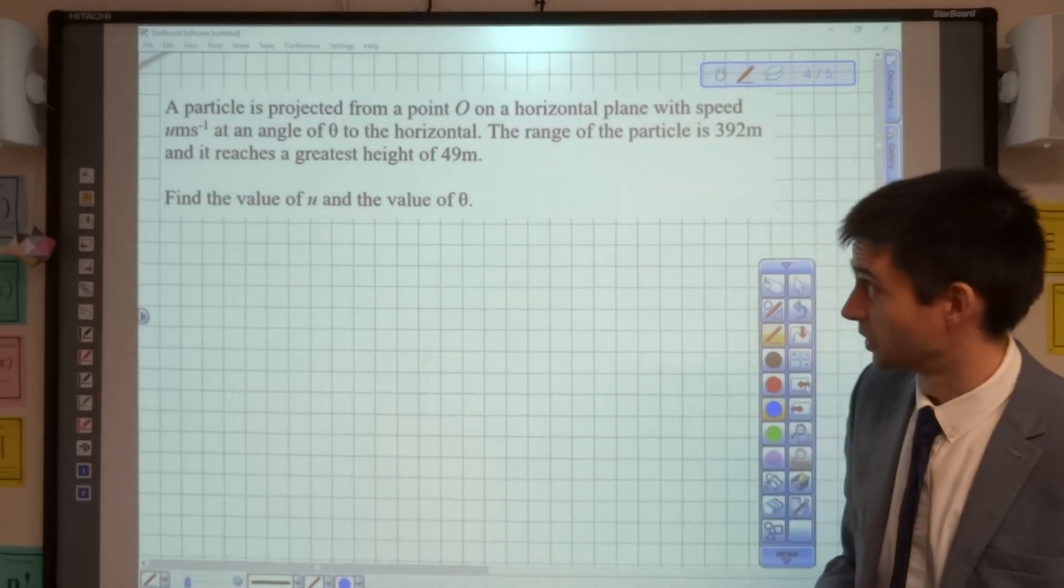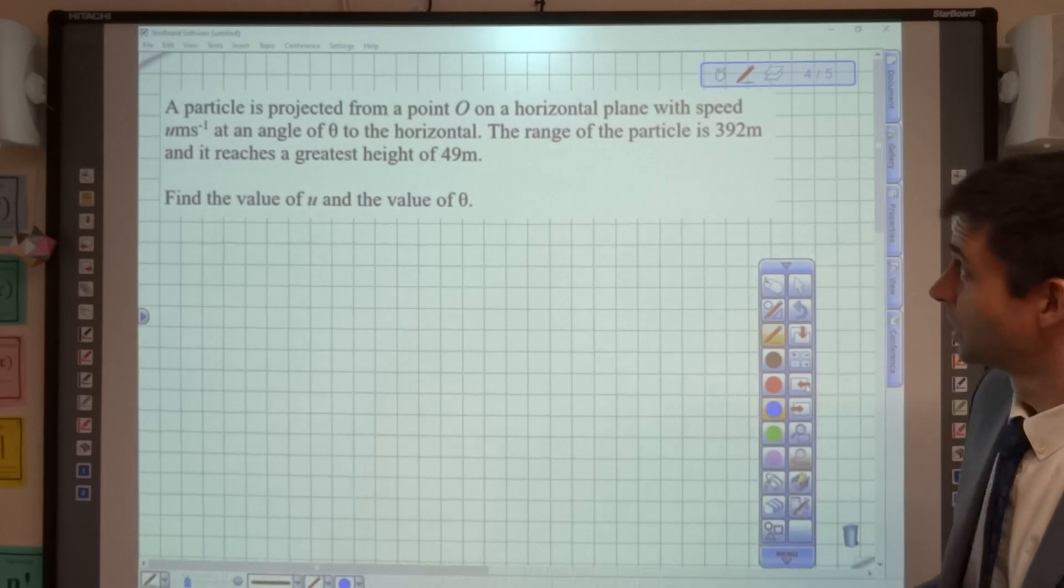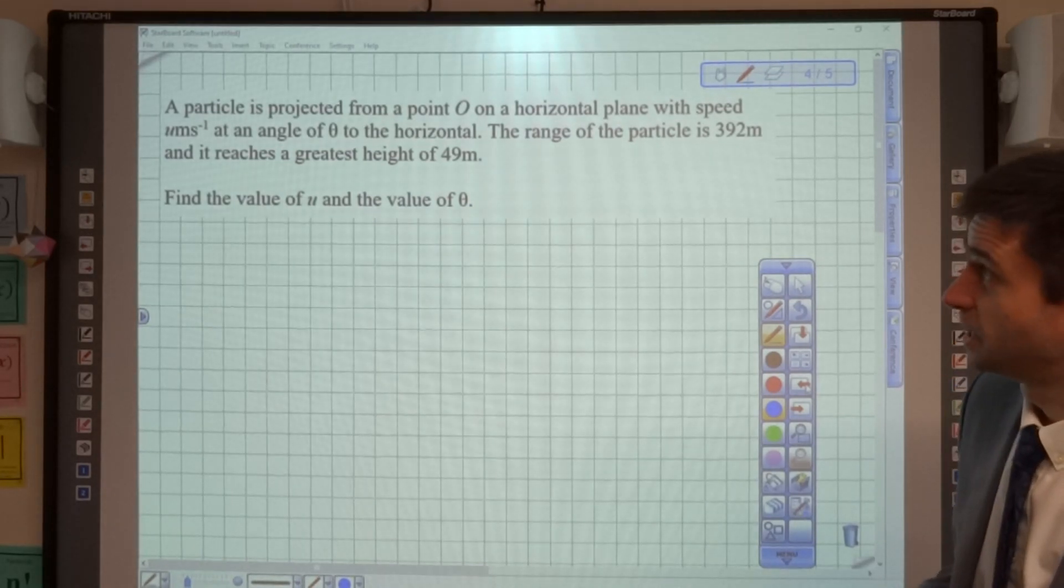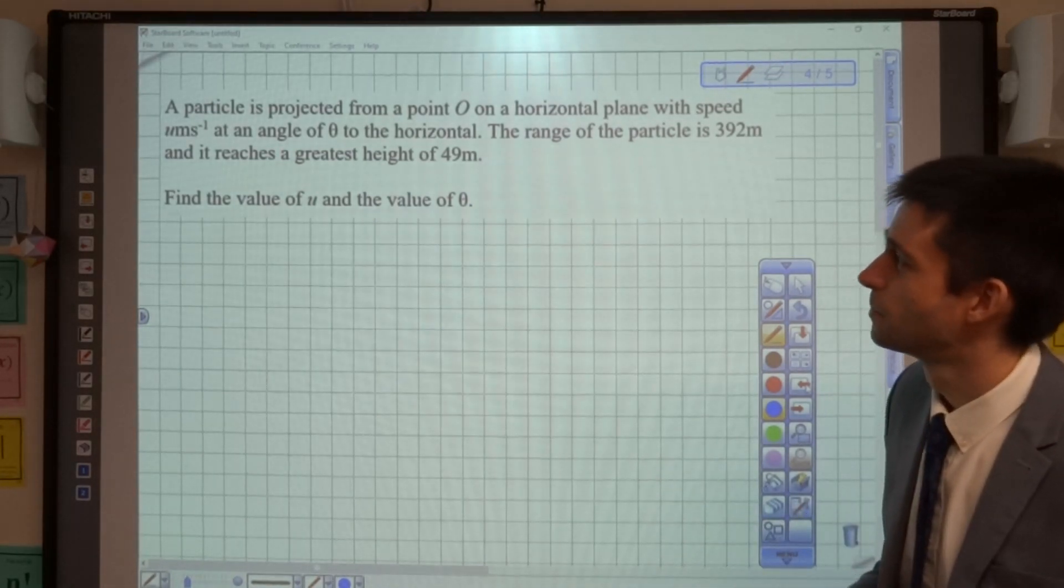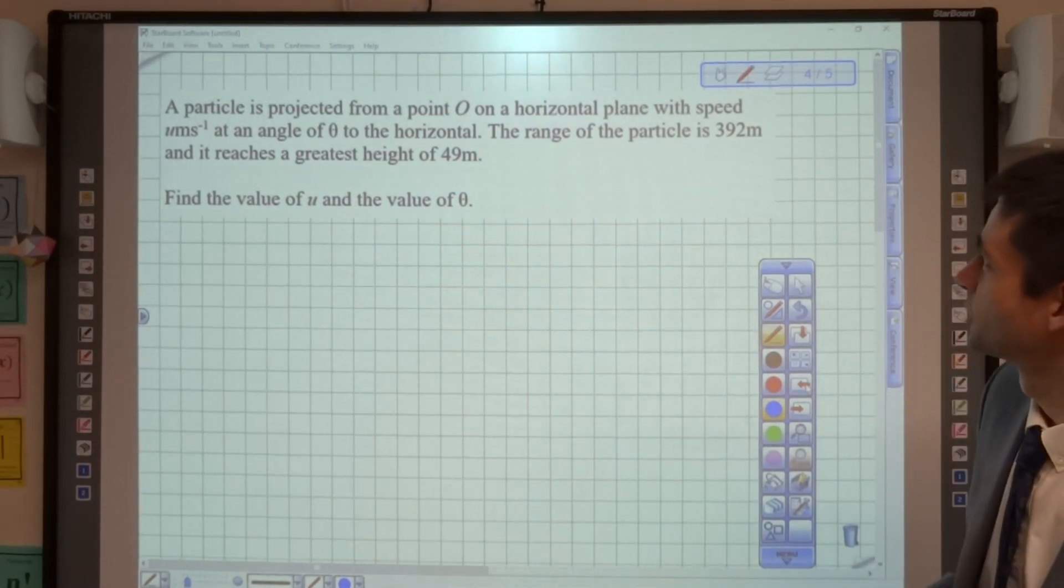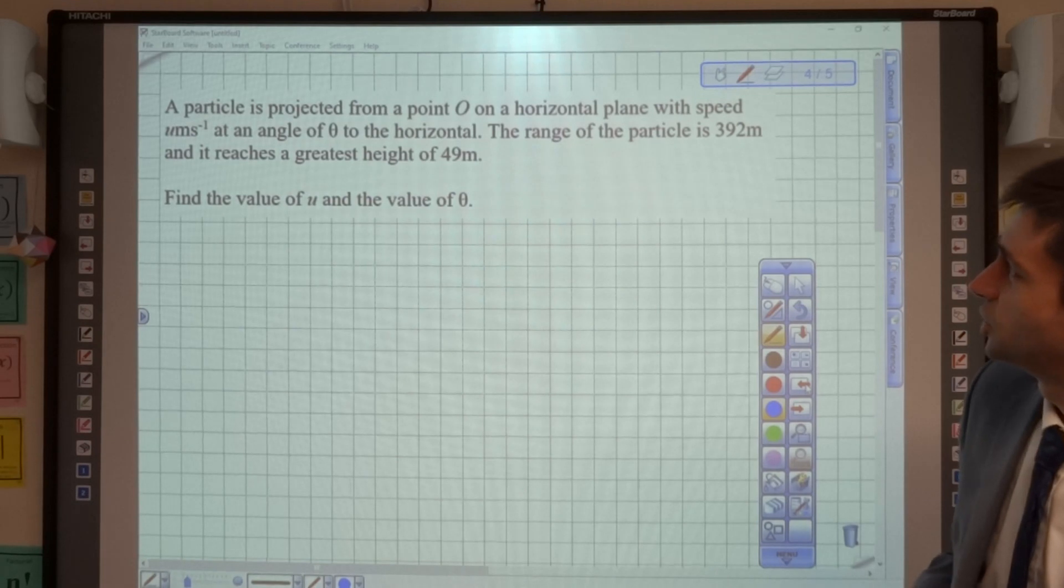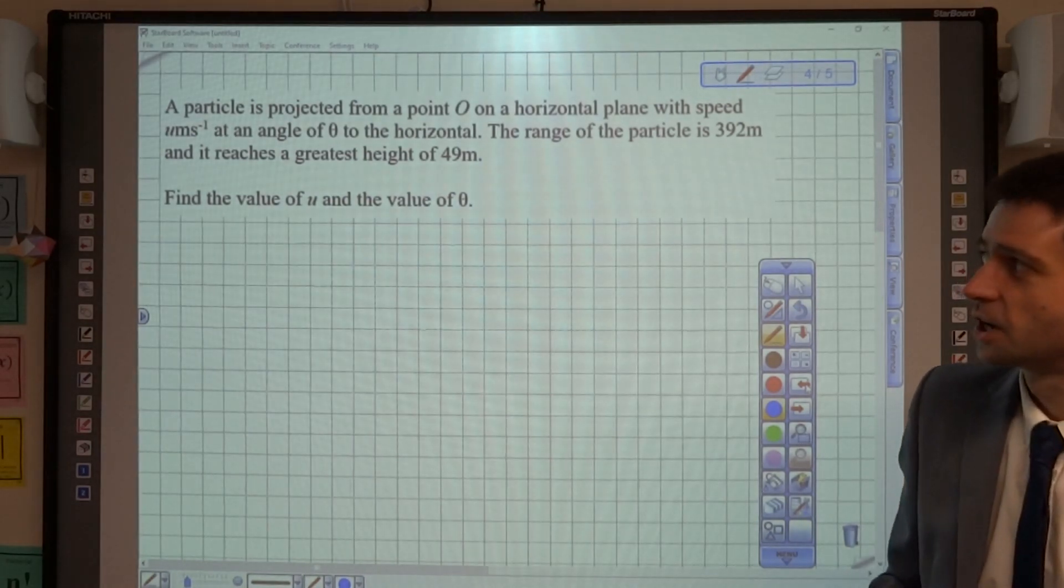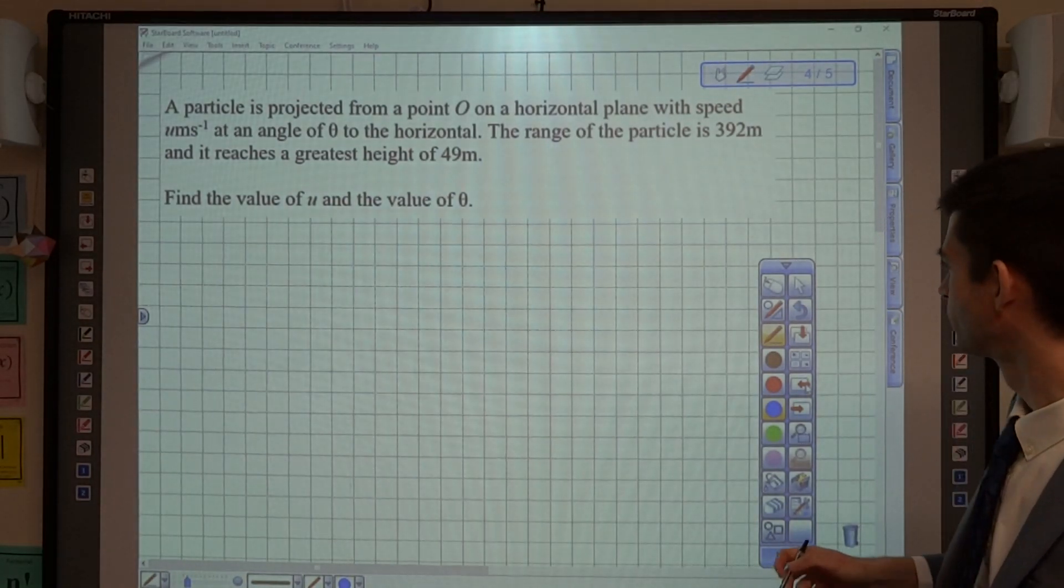So here we go. We have a particle is projected from point O on a horizontal plane with speed u, at an angle of theta to the horizontal. The range of the particle is 392 metres, and it reaches a greatest height of 49 metres.